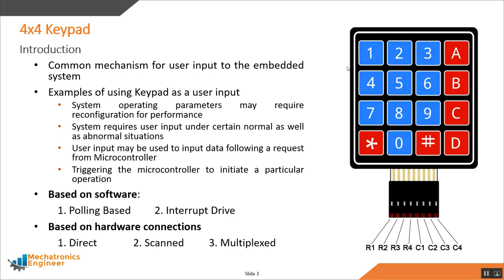This figure shows a 4x4 alphanumeric keypad. There are 16 keys: 10 keys correspond to the 10 digits, 4 keys represent the initial letters A to D, and there are 2 special characters — asterisk and hash.